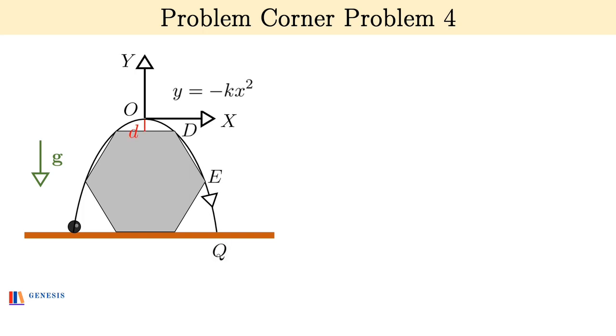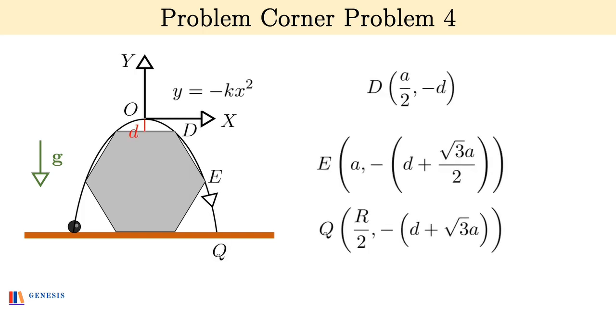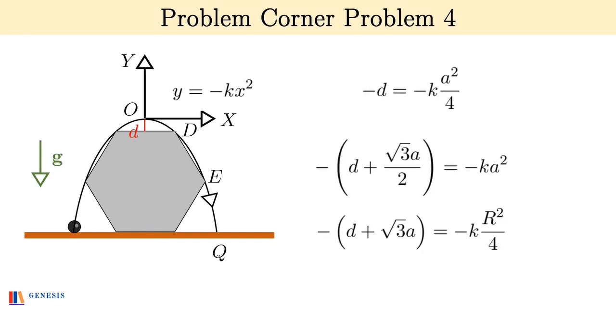Let this vertical distance be d. Then the coordinates of the d, e and q are shown. As these points lie on the curve y = -kx², substituting the coordinates of these points in the equation y = -kx² gives me three very simple relations. Now all of you can solve these three equations in just under two minutes to get capital R = √7a. This solution will be much faster, calculations will be much easier.